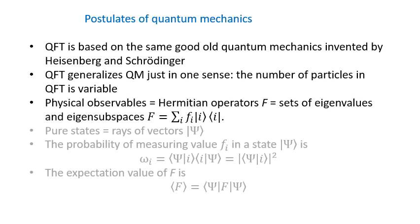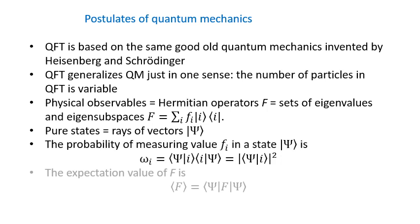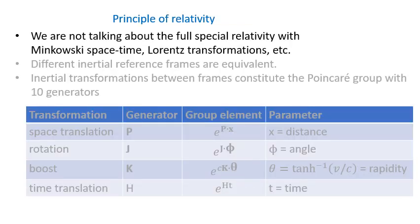From quantum mechanics we know that physical observables are represented by Hermitian operators in the Hilbert space. Pure states are represented by rays of vectors, and there are well-known formulas for calculating the probabilities and expectation values of observables.